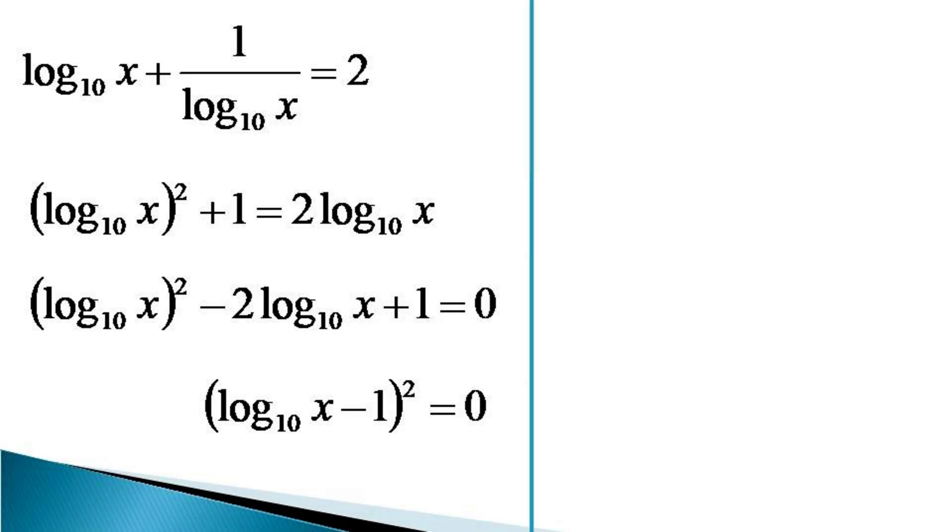Taking square root of both the sides, we get log x to the base 10 minus 1 is equal to 0 and log x to the base 10 becomes equal to 1. And from the definition of log, we get the value of x as equal to 10.